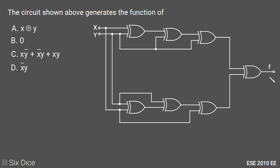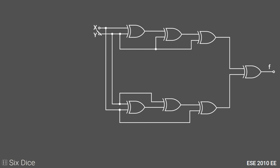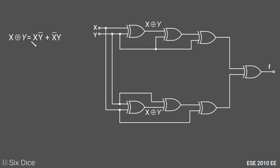We need to find the function generated by this circuit f. The inputs are x and y. The first XOR gate has inputs x and y, and this second XOR gate also has inputs x and y, so the output of both of these XOR gates will be x XOR y.